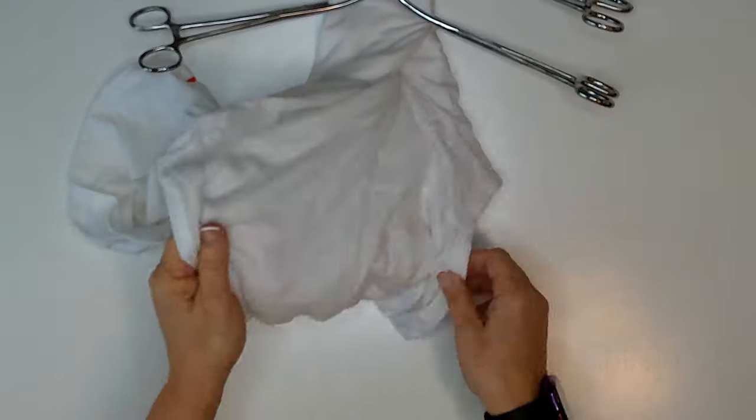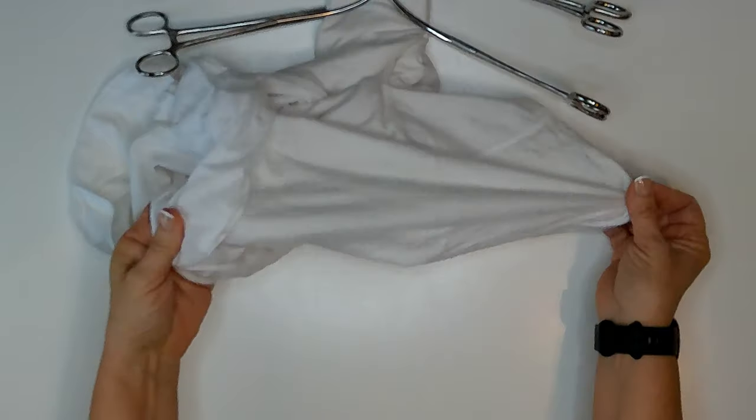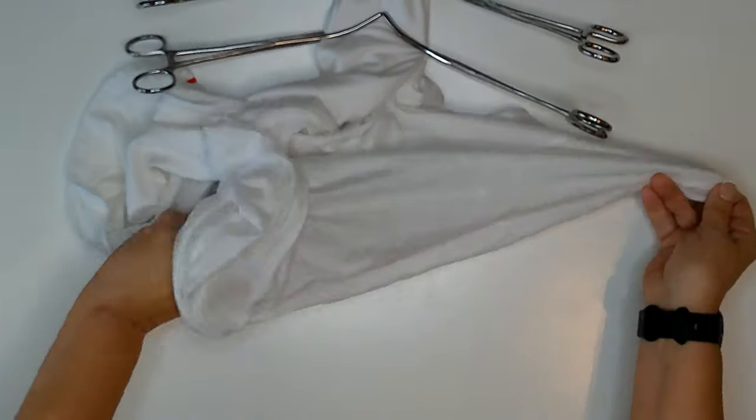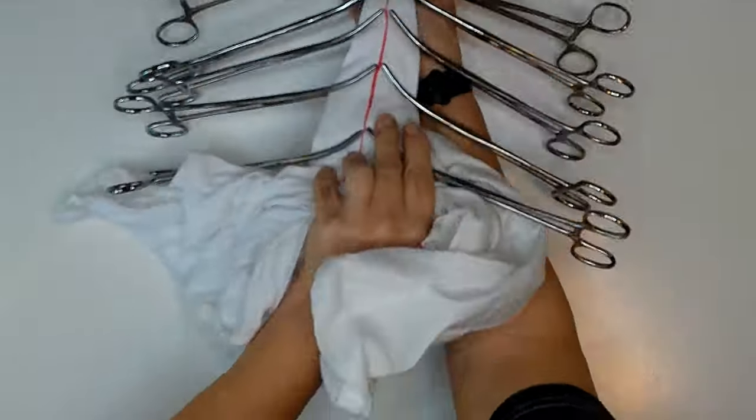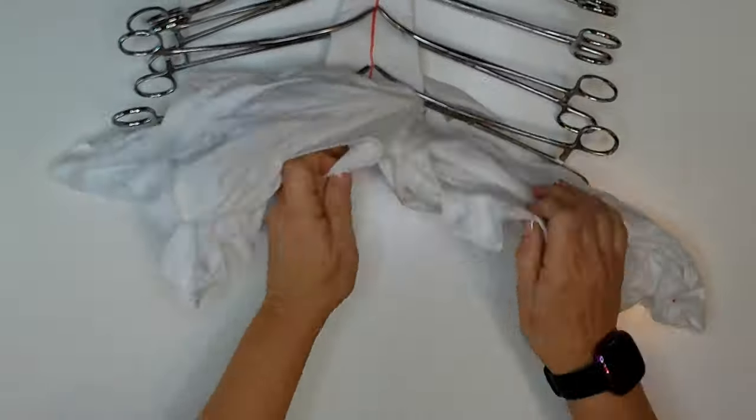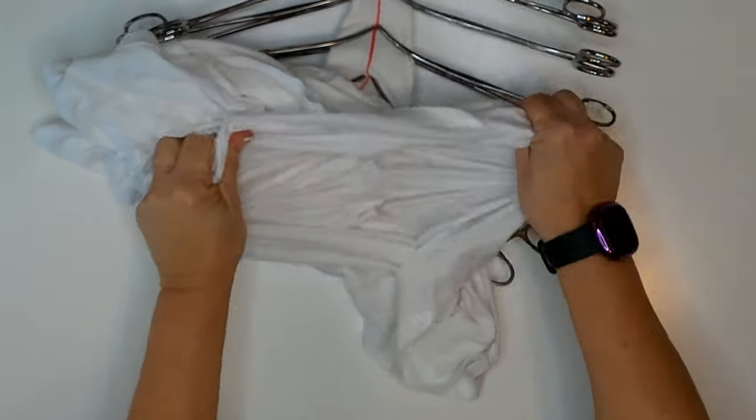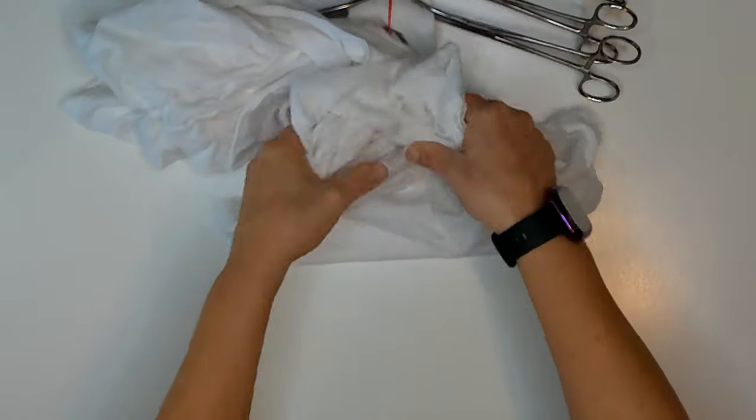I'm going for a watercolor Monet look for the sleeves and the back of the shirt, so I'll do a loose scrunch without even any rubber bands. I'm taking my time to really spread out the pleats and the folds so the dye can get good coverage.